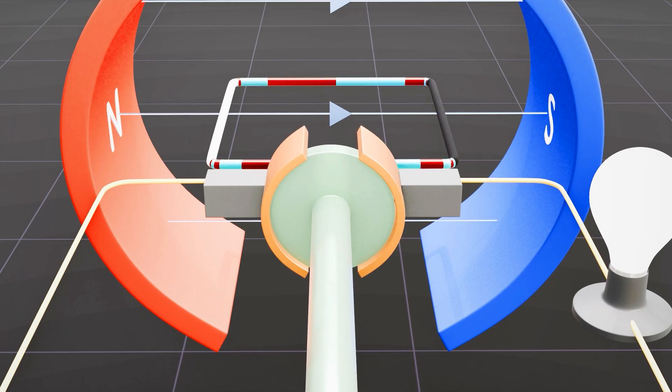As a result, this mechanism ensures that the current consistently flows in one direction within the circuit, transforming the generator's output from AC to DC.